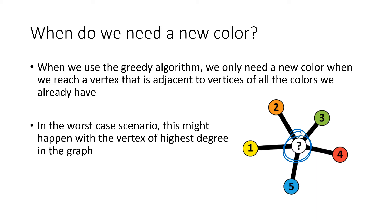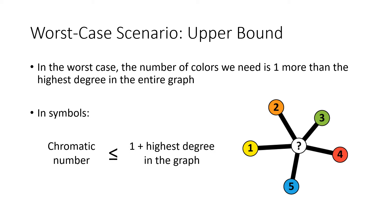So in the worst case scenario, this bad thing that requires us to use a new color might happen at the point where we're at the vertex that has the highest degree in our entire graph. So the worst case in our coloring problem is that the number of colors we would need would be one more than the highest degree in that graph. So if this vertex in my picture here, which has degree five, is the highest degree in the entire graph, and we get to the point where we have to color that vertex, we would need a sixth color. The color of this vertex would have to be color number six, and it had degree five, so that's where we're getting the one more than.